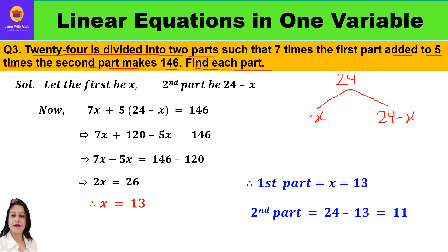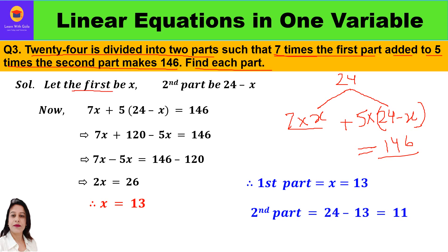Seven times the first part — that is 7 times x — is added to five times the second part — which is 5 times (24 minus x) — and together they make 146. So their sum equals 146.